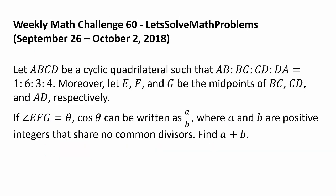Let ABCD be a cyclic quadrilateral such that the ratio AB to BC to CD to DA is 1 to 6 to 3 to 4. Moreover, let E, F, and G be the midpoints of BC, CD, and AD respectively. If angle EFG is equal to theta, cosine of theta can be written as A over B, where A and B are positive integers that share no common divisors. Find A plus B.